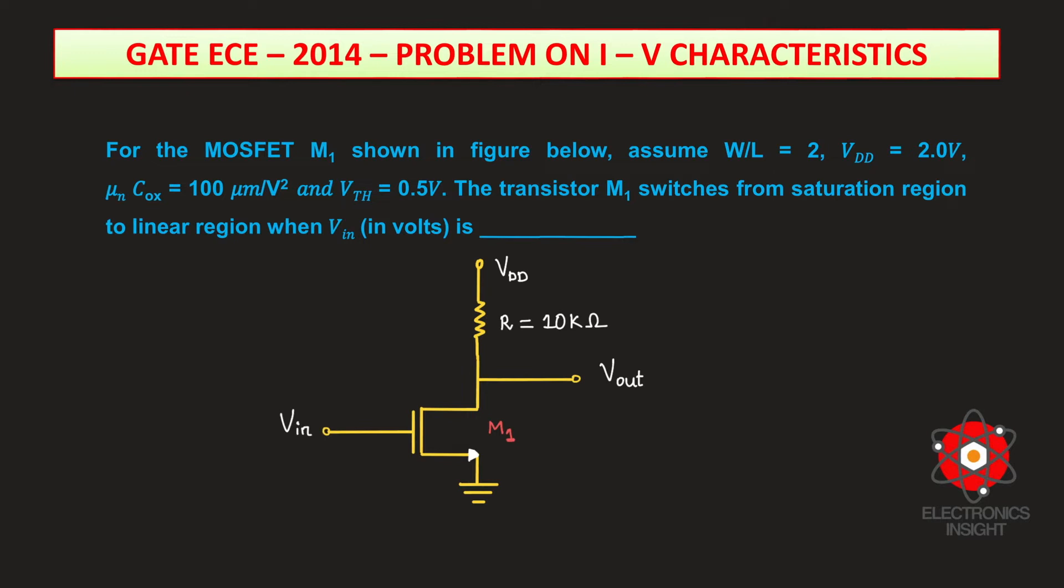The major requirement for this particular problem is we need to identify the input voltage at which the transistor is switching from the saturation region to linear region. For that, let us first consider the saturation region drain current equation because initially the transistor is operating in saturation region.